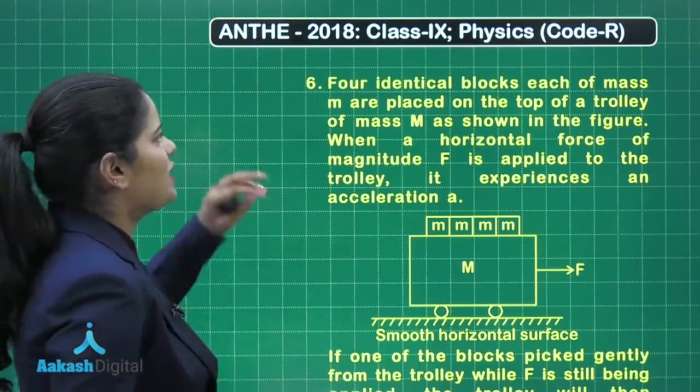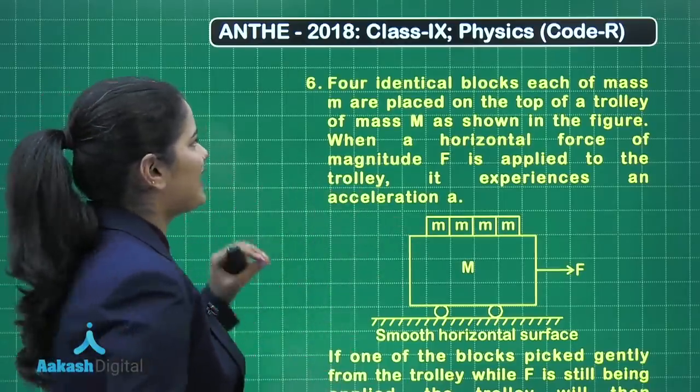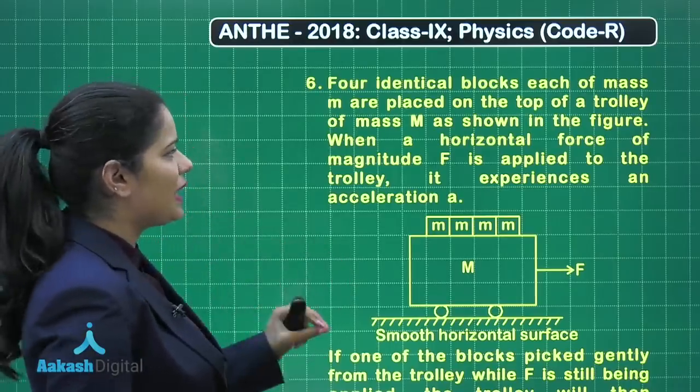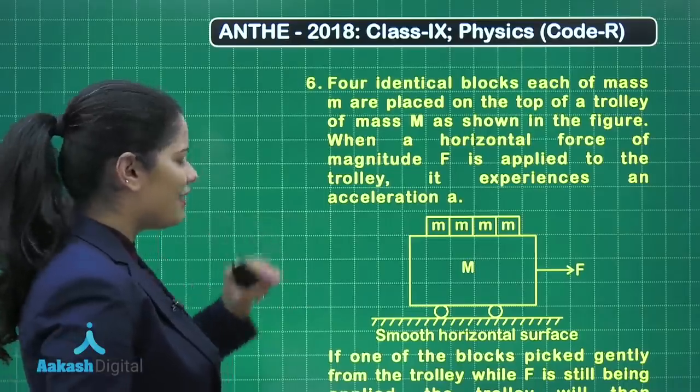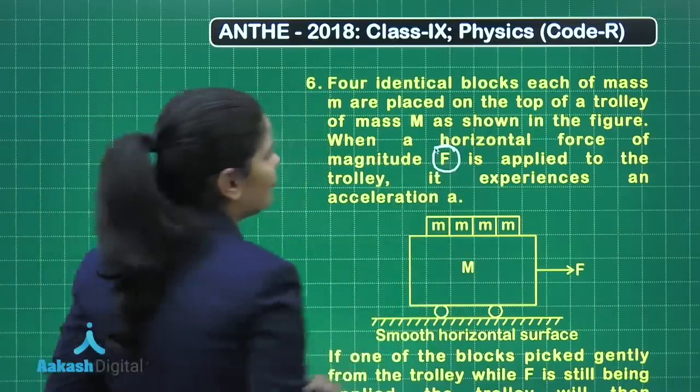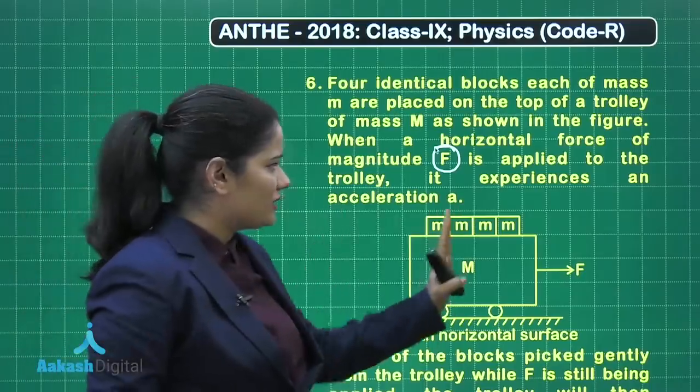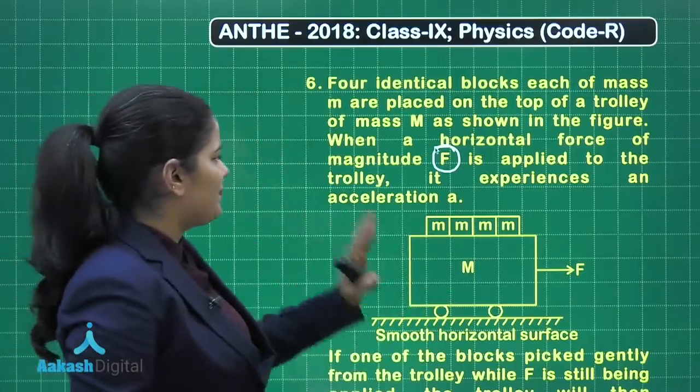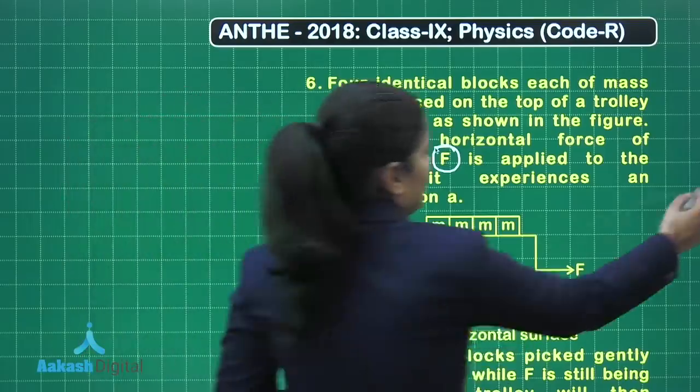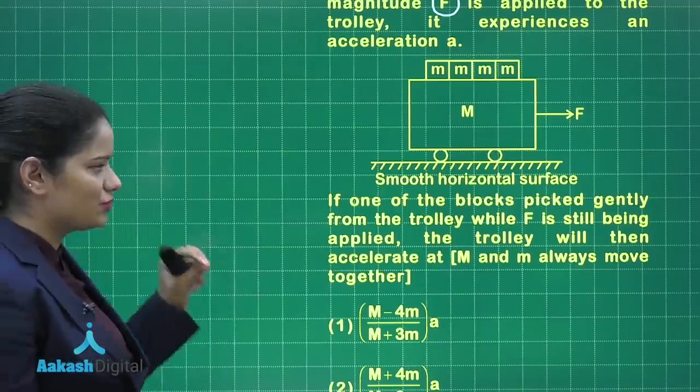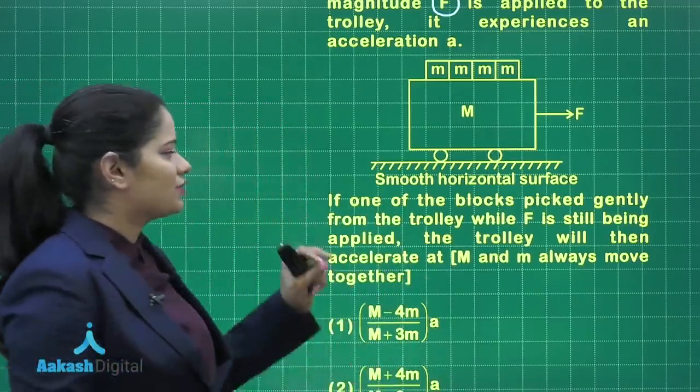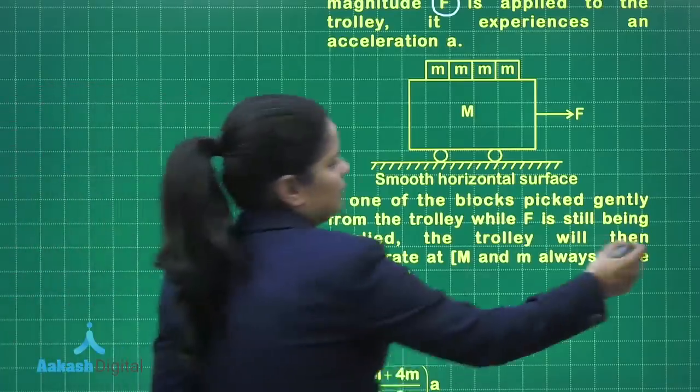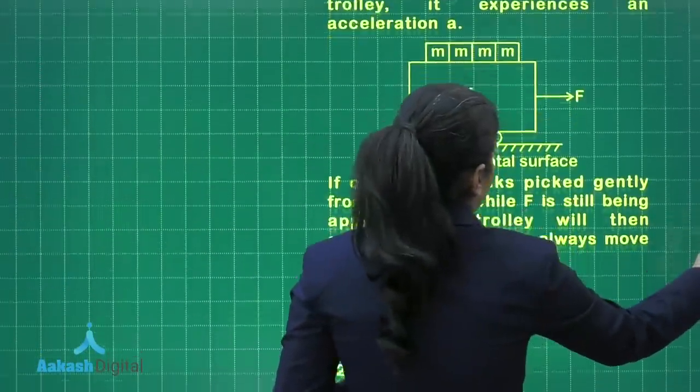Let's read this question first. This says 4 identical blocks each of mass M are placed on the top of a trolley of mass capital M as shown in the figure. When a horizontal force of magnitude F is applied, here we are given this force F applied on this trolley, it experiences an acceleration A. Further, the question reads: if one of the blocks is picked up gently from the trolley while F is still being applied, the trolley will then accelerate. We need to find out the new acceleration of the trolley.